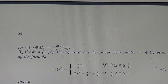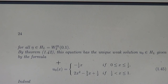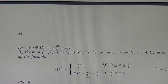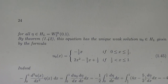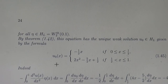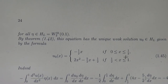By the theorem we proved, this equation has a unique solution U0 given by the formula: minus one-half x on the interval from zero to one-half, and 2x squared minus five-halves x plus one-half on the interval from one-half to one. This is the solution of the variational equation. It is continuous but not differentiable at the point x = one-half, so it cannot be a regular solution — it is a weak solution.